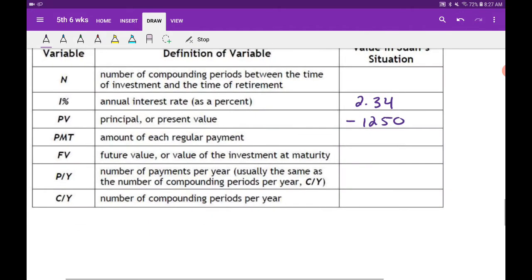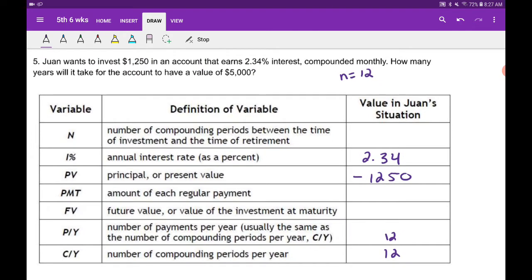Which means both of these would be 12 here. How many years will it take for the account to have a value of $5,000? So you want a future value of $5,000 from that $1,250.